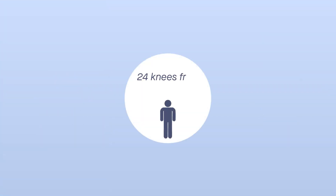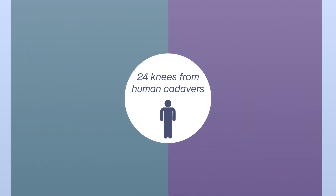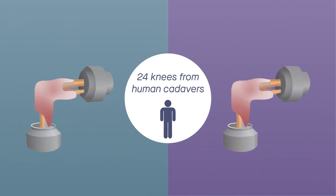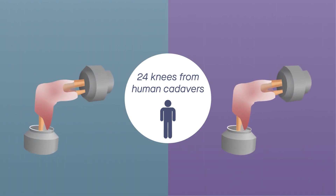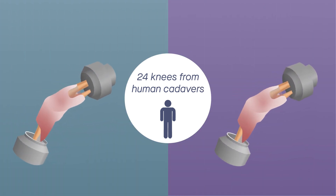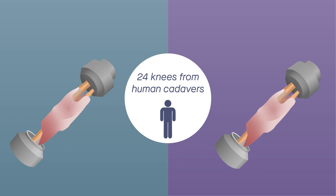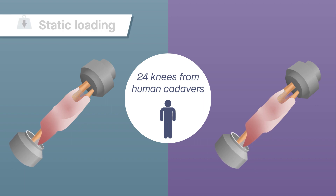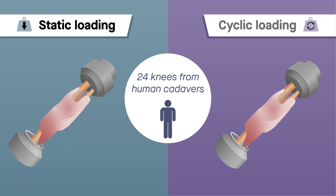Researchers reached those conclusions by testing 24 knees from human cadavers. A 6-degree-of-freedom robotic system was used to place the knees in hyperextension through one of two methods: static loading or cyclic loading.